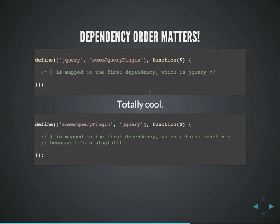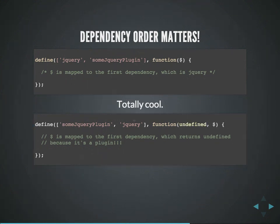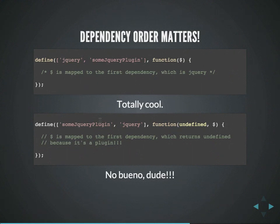What if you put the jQuery plugin first in the array and then jQuery? Require.js will load them in the right order, but the problem is your function parameters will be all out of whack — the dollar sign will refer to the jQuery plugin, not jQuery, and things will explode. The safest approach: put things that export a value like jQuery or Backbone at the beginning of the array, and put non-exporting stuff like jQuery plugins at the end so you don't need to write out a bunch of undefined.